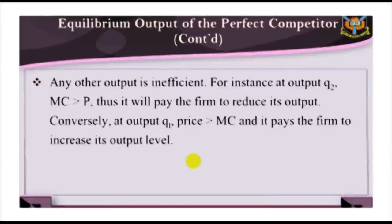For instance, at output Q2, MC is greater than P; thus it will pay the firm to reduce its output. Conversely, at output Q1, price is greater than MC; it pays the firm to increase its output level.